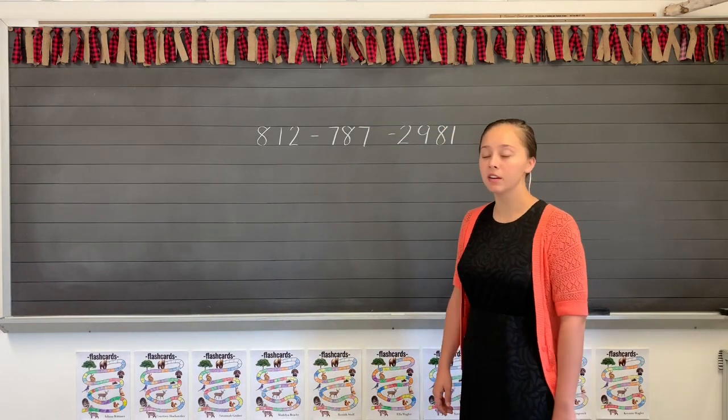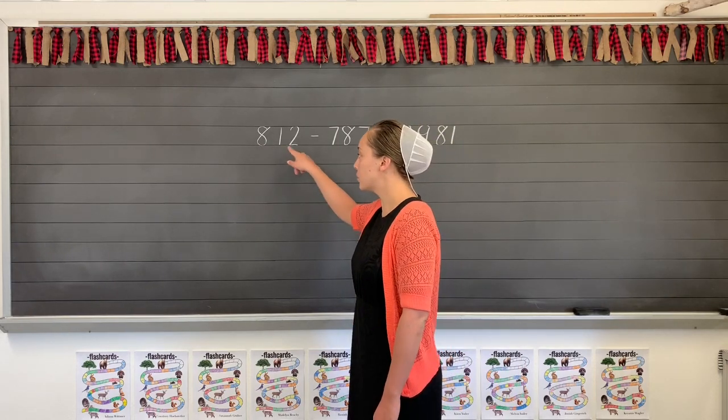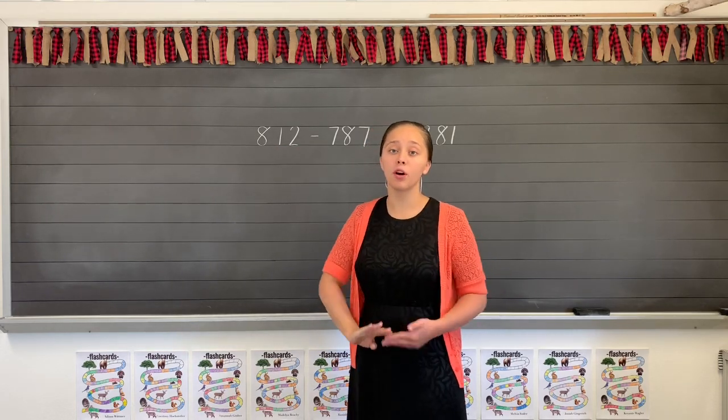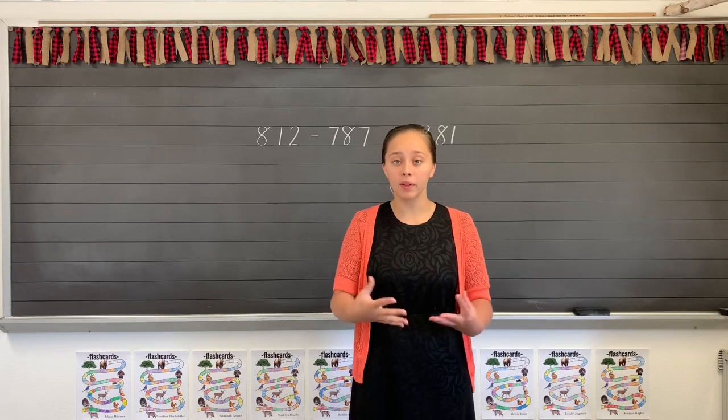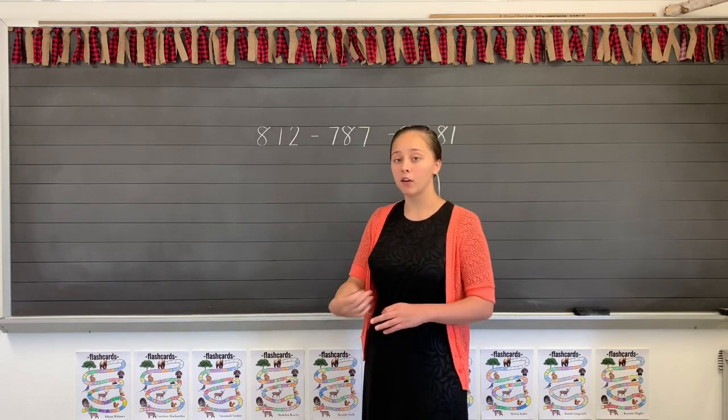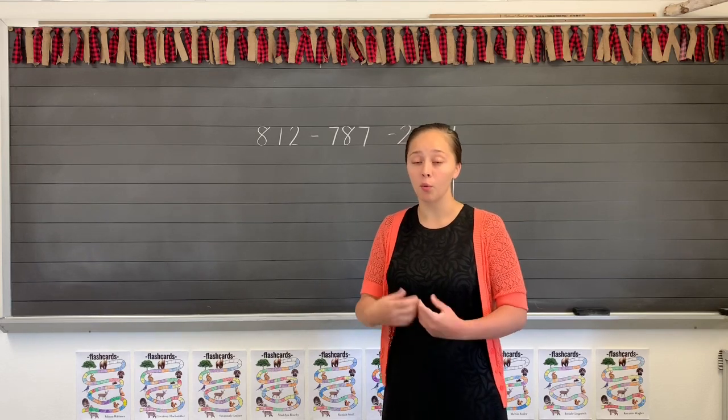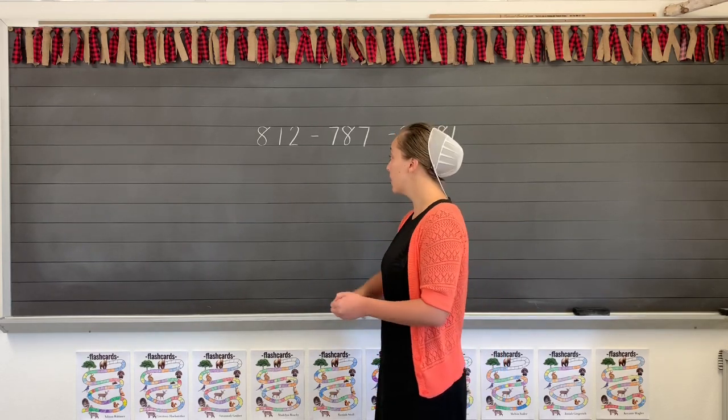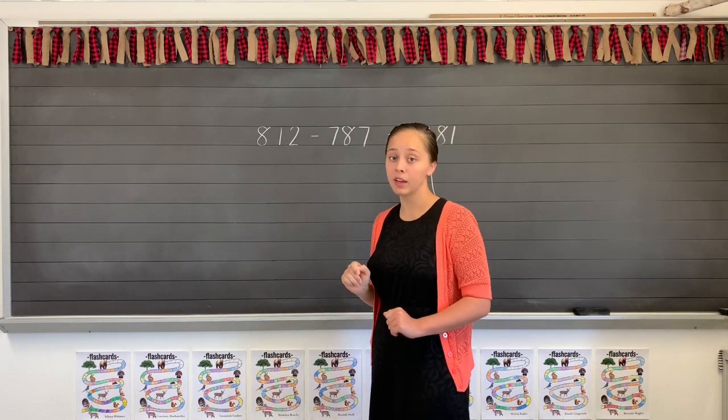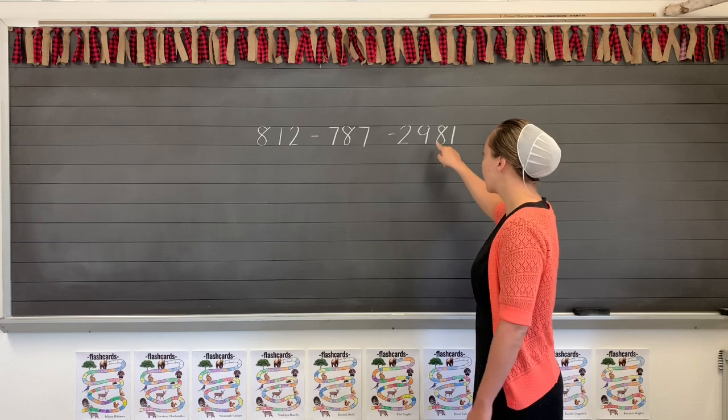I have one telephone number on the board. Here is how your telephone numbers should all look. All of your telephone numbers are probably going to start with 812. That is what we call the area code, and it's where we live. We all live in southern Indiana, so our area code is 812. Now, if your mom or dad is from out of state, they might have a telephone number with a different area code from where they used to live. But if your parents are just from Indiana, your area code will probably be 812.